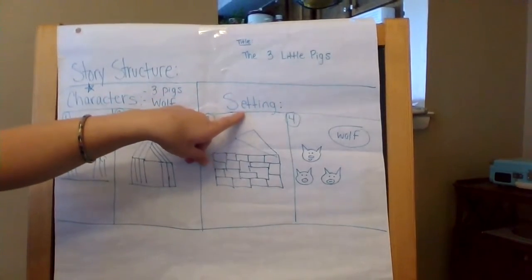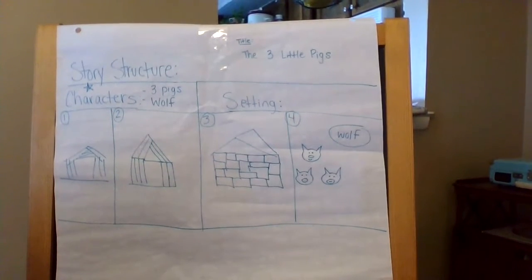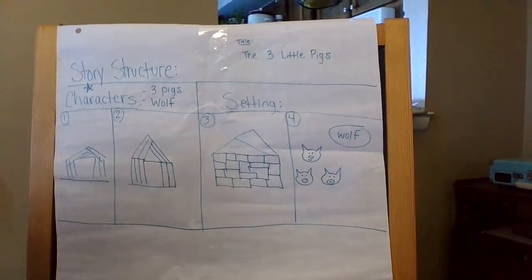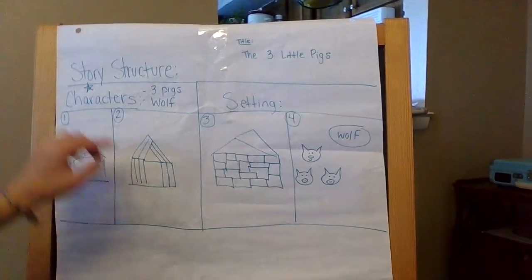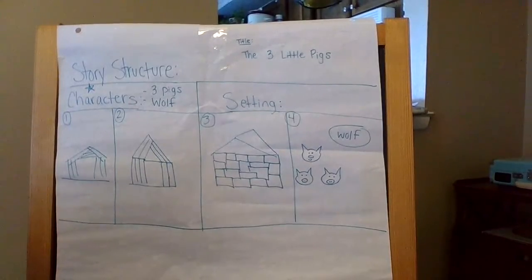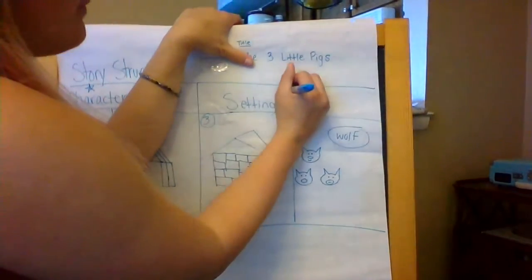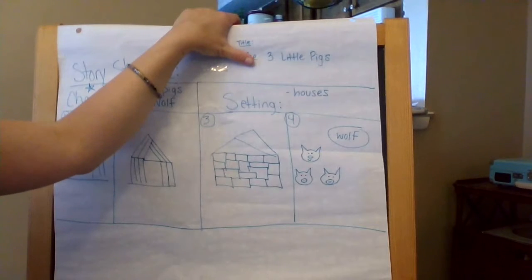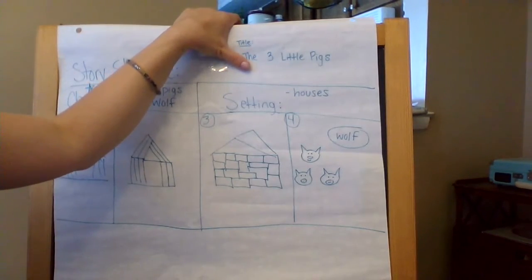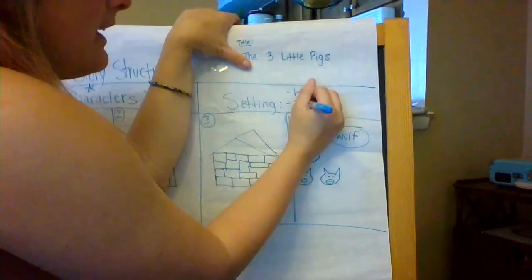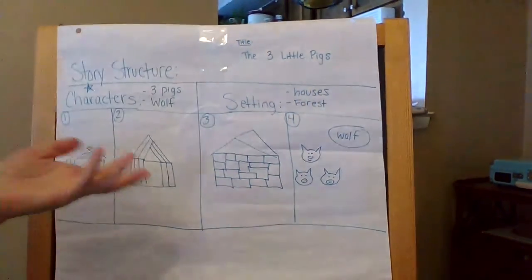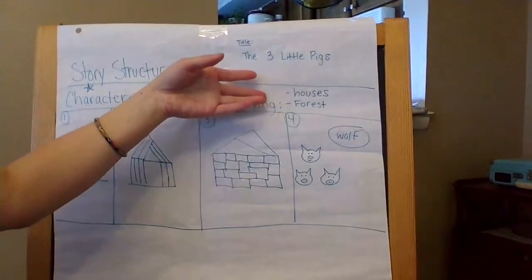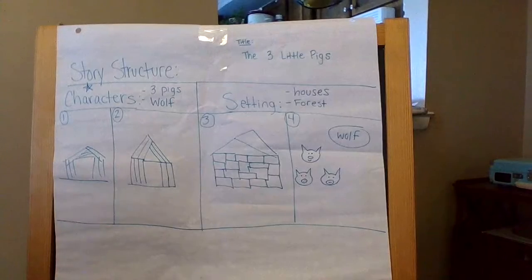Next we're going to go over here to setting. Setting is where the story takes place — where is this story happening? In The Three Little Pigs, there's more than one setting, and that is okay. You are allowed to have more than one setting, just like you're supposed to have more than one character in most stories. So our setting is their houses. The Three Little Pigs each have their own house, and the story takes place in each of their houses. I'd also include that it's usually somewhere in a forest. And again, if the book you're reading is not set in a forest or in houses, you would write wherever that story happens to be happening.